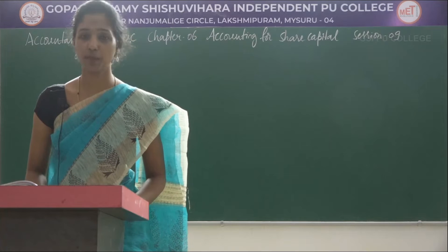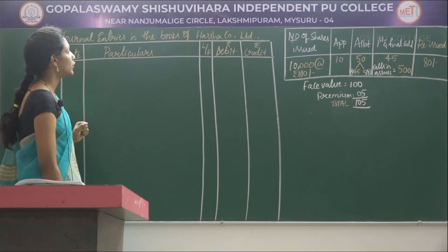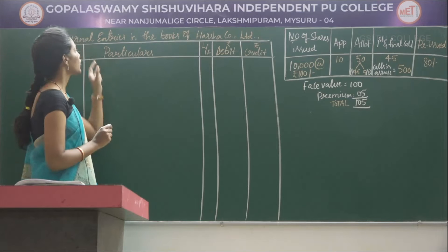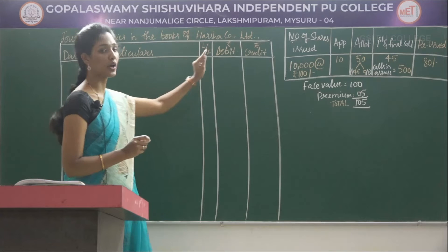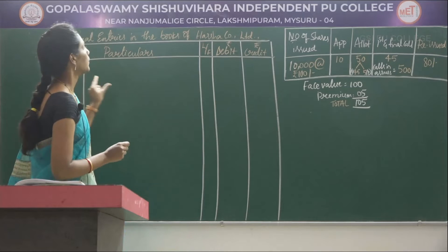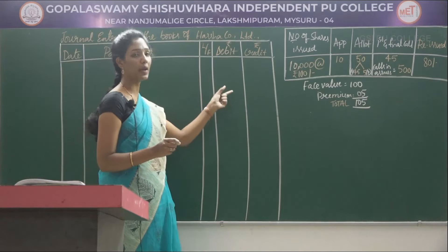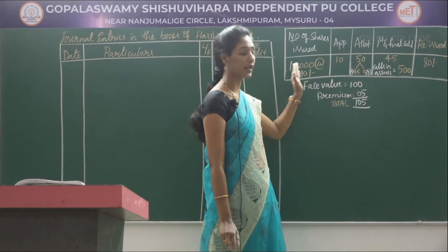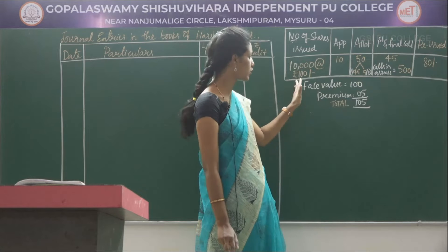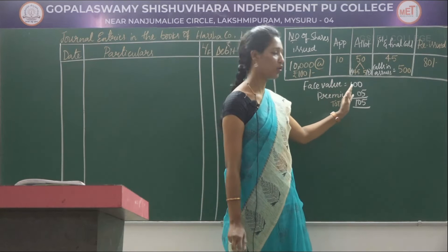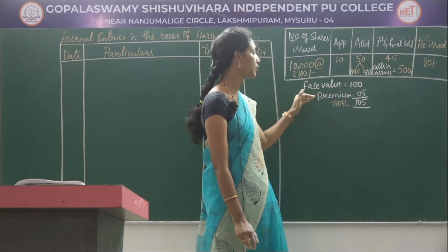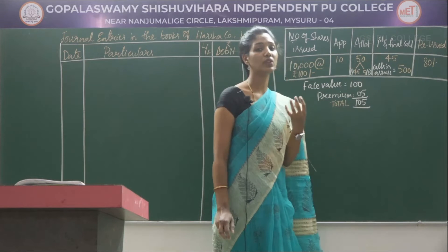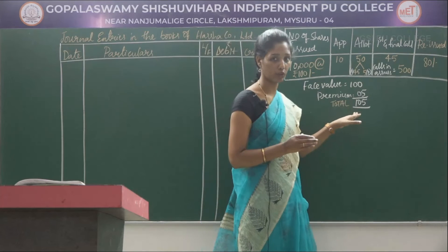Now let's solve the problem. Here is the format of the journal. You should write the heading correctly: Journal entries in the books of Harsha Company Limited — Date, Particulars, Ledger Folio, Debit and Credit. The number of shares issued is 10,000 at Rs 100 each, so 100 is the face value, but it was issued at a premium of Rs 5. So the total value of the shares to be issued to the public is Rs 105.